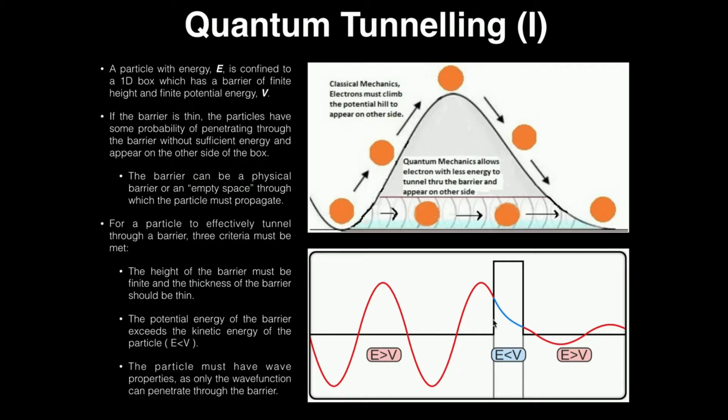Also, the barrier, if you want to think of it in terms of width, has to be relatively thin. Also, the particle needs to have wave-like properties. In other words, it has to be quantized. It can't have classical macroscopic properties. It has to behave as a wave in order to be able to tunnel across this barrier. And if those three or four conditions, however you want to talk about them, are met, it has some probability of tunneling.